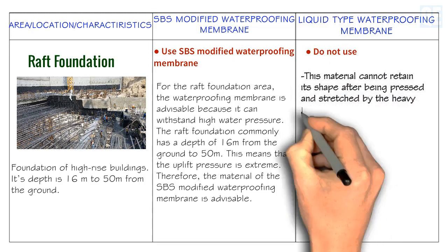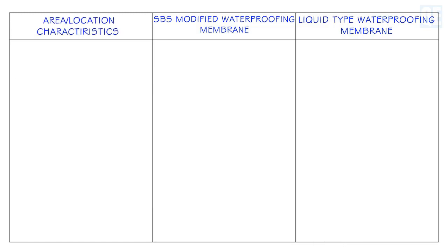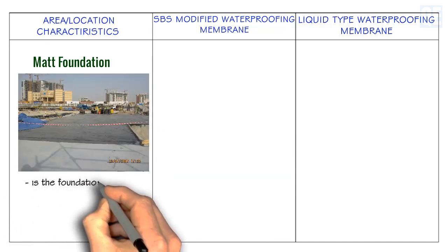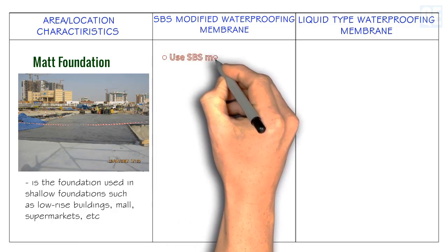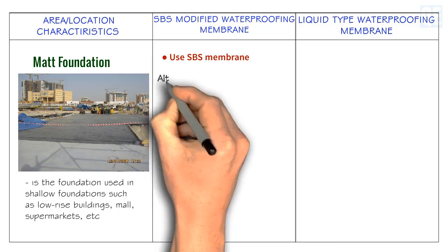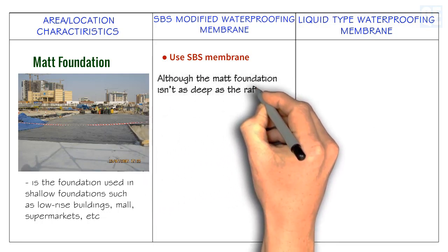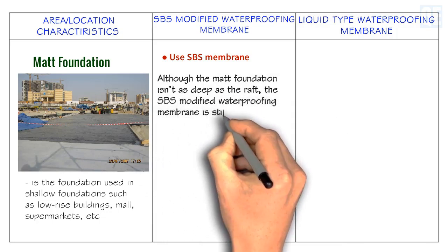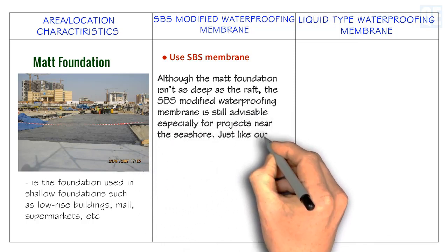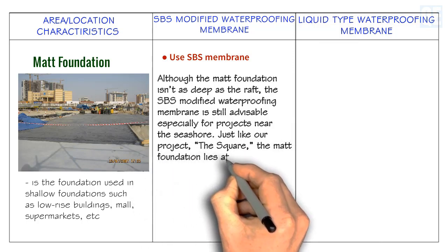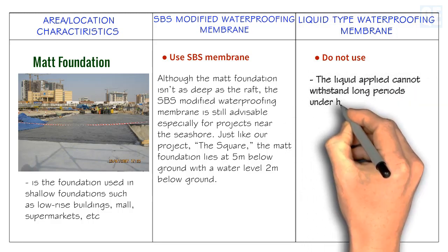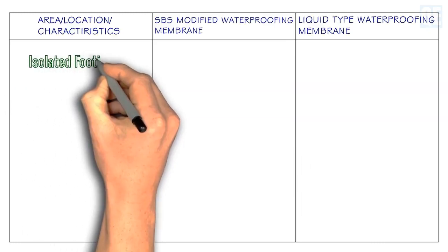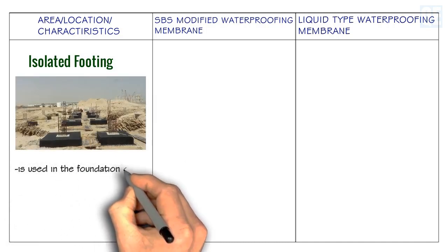For mat foundation, used in shallow foundations such as low-rise buildings, malls, and supermarkets, use SBS modified waterproofing membrane. Although the mat foundation isn't as deep as the raft, SBS is still advisable, especially for projects near the seashore. For example, on our project, the mat foundation lies 5 meters below ground with a water level 2 meters below ground. Do not use liquid waterproofing, as the liquid-applied material cannot withstand long periods under high pressure.